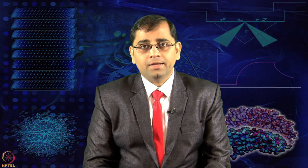Additionally, another group worked on antibody-based approaches and in 2015 published a study in Science — a tissue-based map of the human proteome. For the first time, they showed where proteins are localized, providing evidence not only that proteins exist but also how they are localized at the tissue level, using immunohistochemistry and tissue array-based approaches.